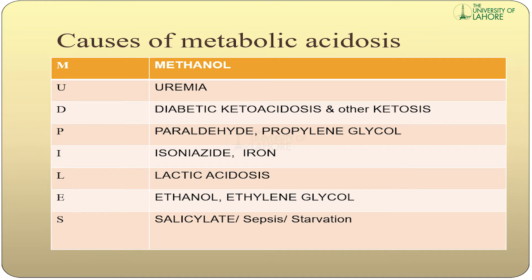Causes of metabolic acidosis are remembered using the mnemonic MUDPILES: M — methanol; U — uremia; D — diabetic ketoacidosis and other ketoses; P — paraldehyde, propylene glycol; I — isoniazid, iron; L — lactic acidosis; E — ethanol, ethylene glycol; S — salicylates, sepsis, starvation.